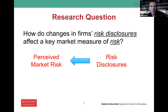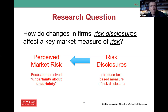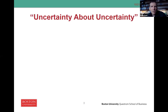We'll see to what extent the provision of additional signals about risk helps inform the market, and in turn reduces the market's uncertainty about uncertainty. That is a key construct within this literature. The market outcome variable we're examining is implied volatilities used to derive what's called the variance risk premium. I'd like to turn it over to Federico to describe this idea of what uncertainty about uncertainty represents.